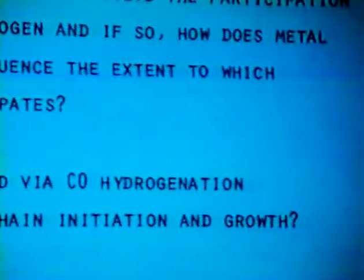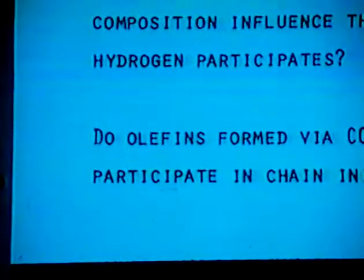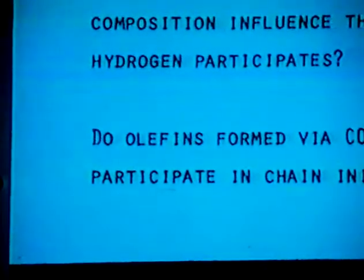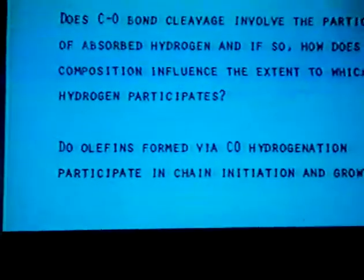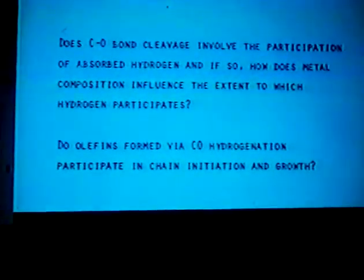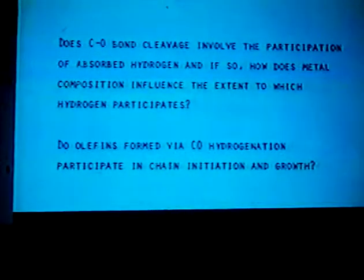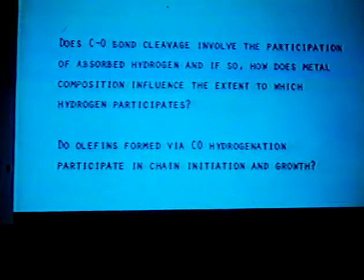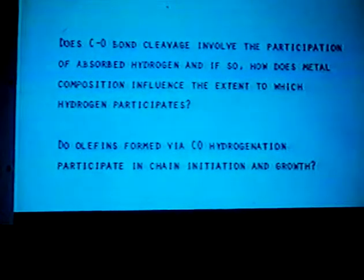A second question of interest is to ask about the olefins that are produced as primary products of CO hydrogenation. Do these products simply exit the reactor never to react again, or do they undergo secondary reactions? We certainly know that they undergo hydrogenation to produce paraffins, and the alpha olefins will isomerize to produce beta and gamma olefins. But what about the possibility that these very same olefins participate in chain initiation and chain growth? This is a more subtle question and one which hasn't been answered fully in the published literature.